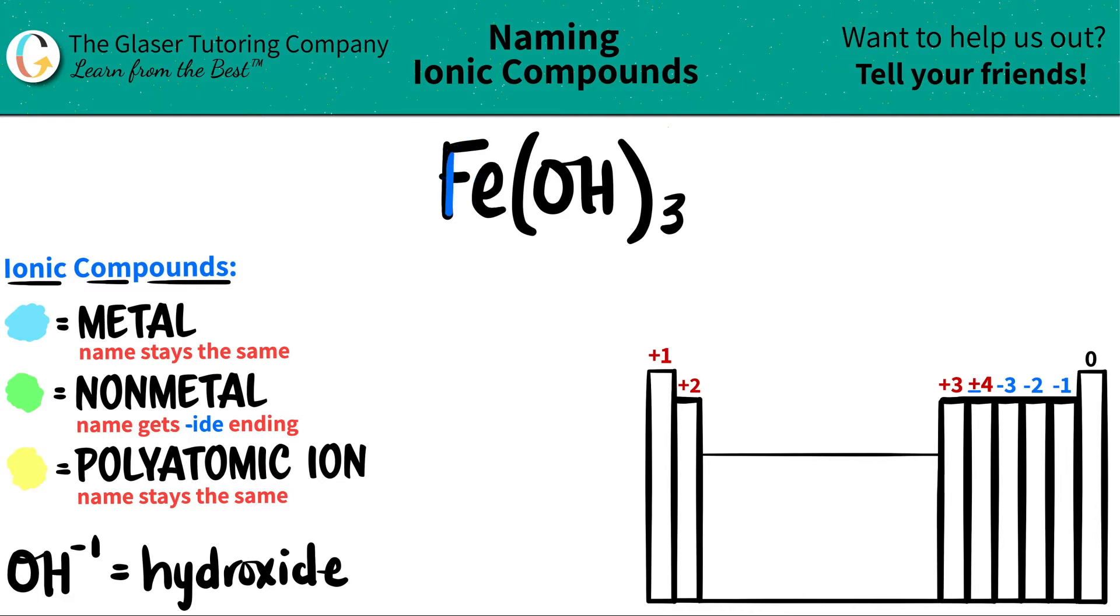We have Fe for iron, we have O for oxygen, and H for hydrogen. Always spot out the polyatomic first and then work from there. But the hard part is that polyatomics are never going to be on the periodic table. You always have to memorize them.